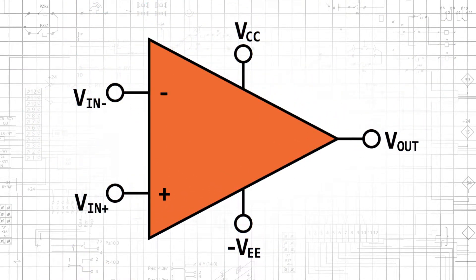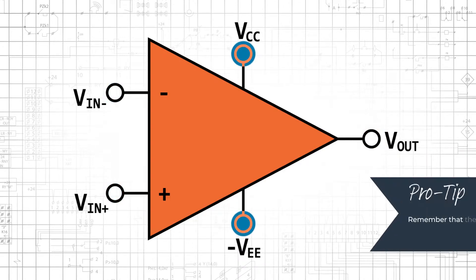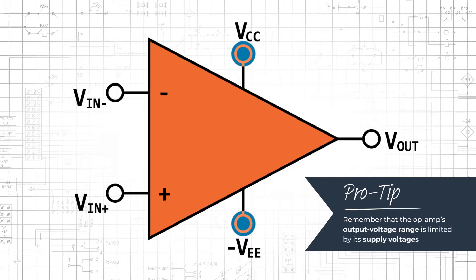A real op-amp needs at least five terminals: two inputs, one output, and two power supply connections. We often omit the power supply terminals when we draw an op-amp, but it's important to remember that the op-amp's output voltage range is limited by its supply voltages.